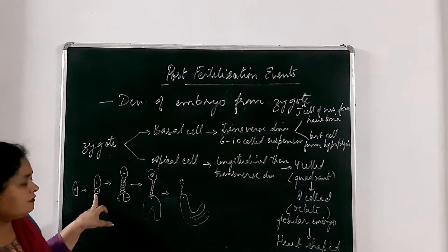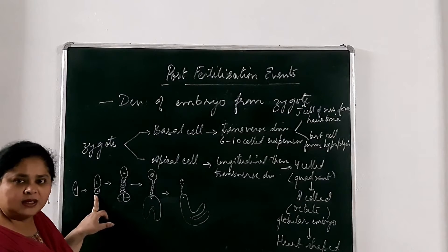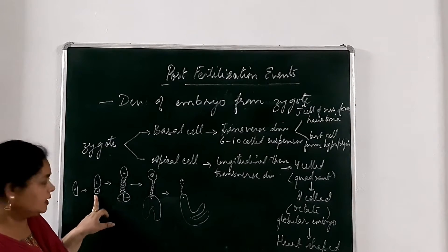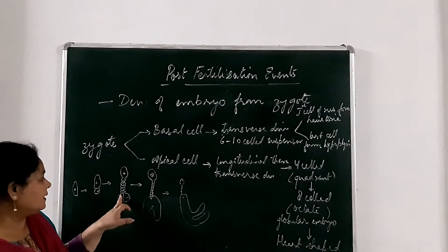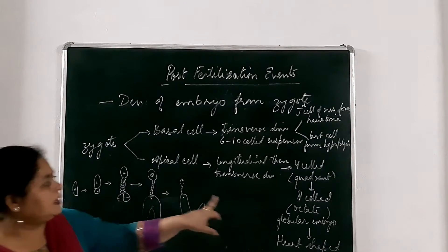Apical cell divides, first of all, longitudinally and then transversely. And it will become a 4 cell body.